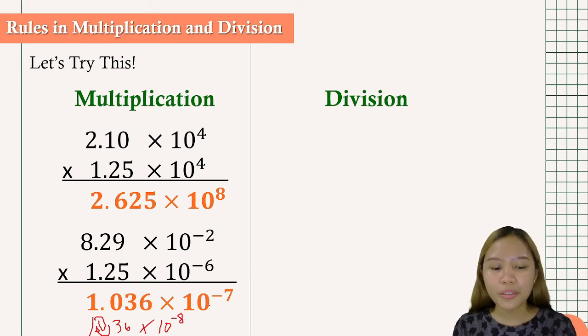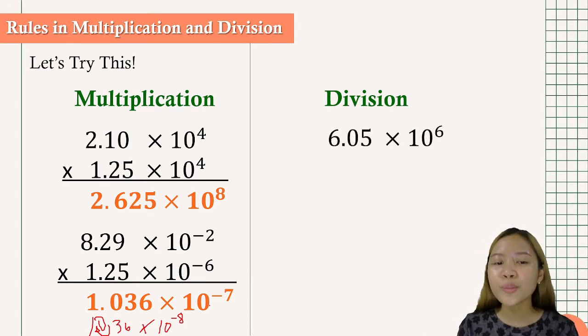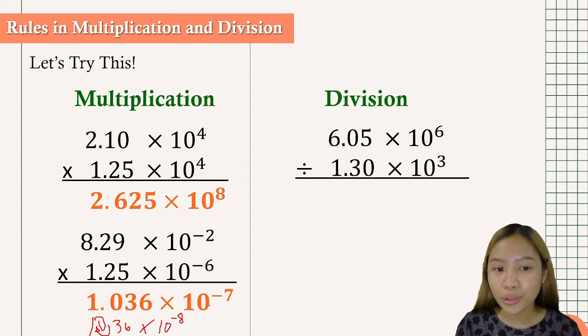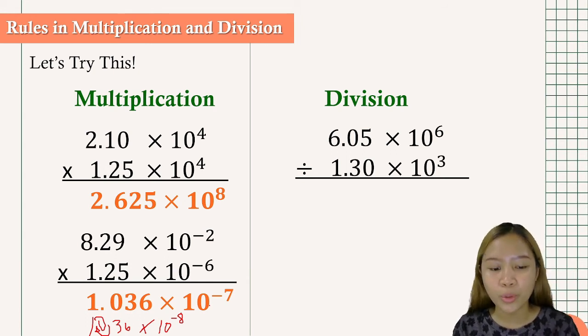Now let's go to the division. We have 6.05 times 10 to the 6th divided by 1.30 times 10 to the 3rd. So what could be our quotient here?